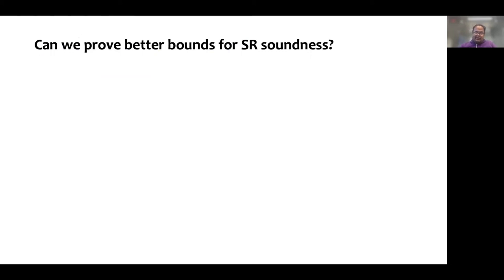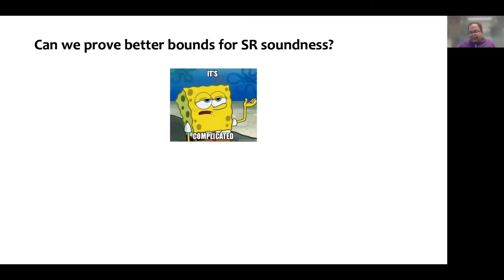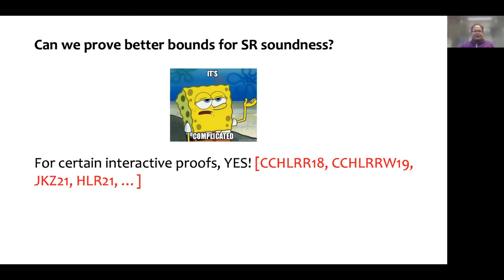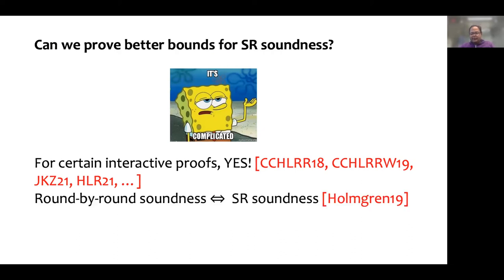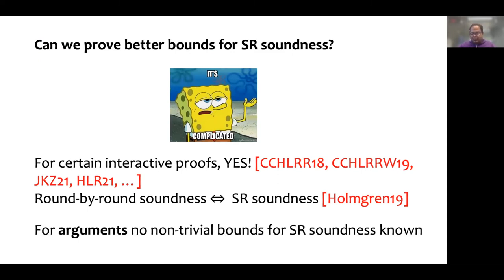Since we cannot do something generically, the question is whether for some protocols we can prove better bounds directly for the state restoration soundness. The answer is: it's complicated. It turns out that for interactive proofs, it is sometimes possible to give better bounds. In particular, some proofs satisfy a different notion called round-by-round soundness, which was shown to be equivalent to state restoration soundness by Holmgren. However, we are interested in succinct protocols, which are arguments, and for these we don't actually know of any non-trivial bounds for state restoration soundness.